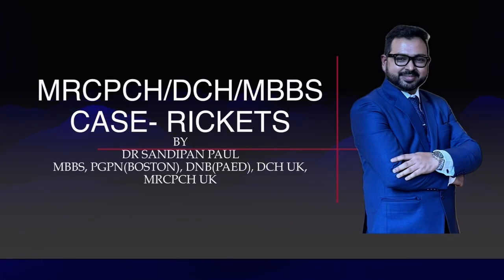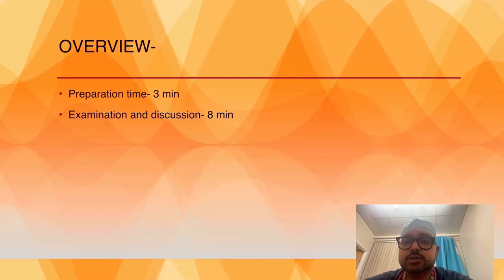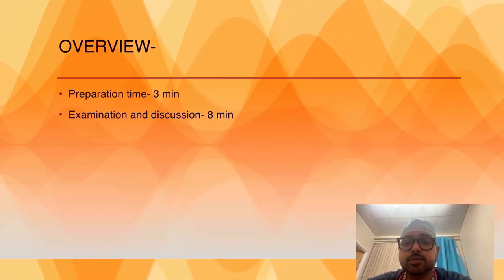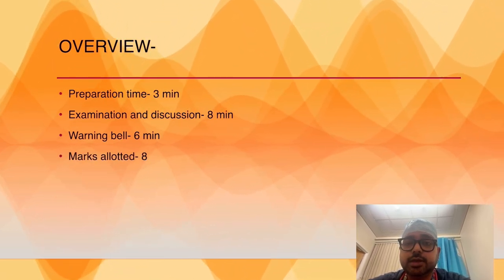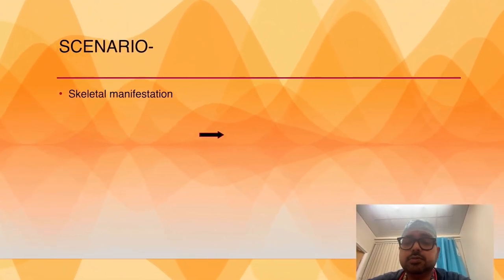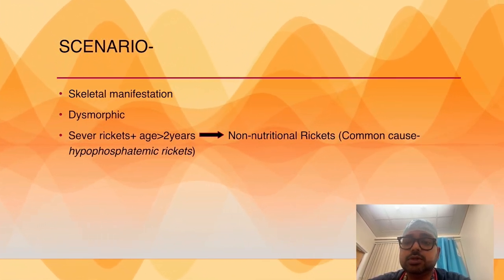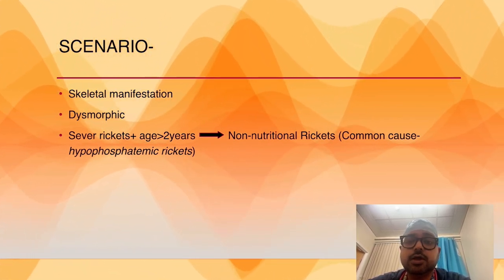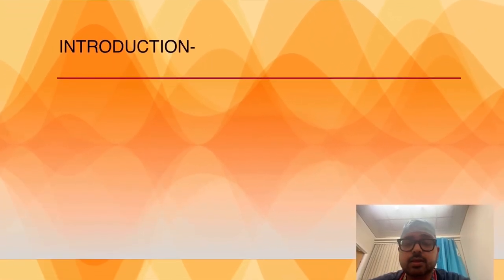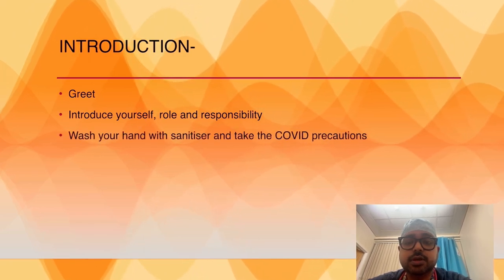Hello friends, today we will discuss another important topic: rickets. Overview - preparation time is three minutes for examination and discussion is eight minutes. Warning bell will be given at six minutes. Total marks allotted: eight. Scenario: there could be skin manifestation, dysmorphism, severe rickets with more than two years of age, which is seen in non-nutritional rickets. Most common cause: hypophosphatemic rickets.